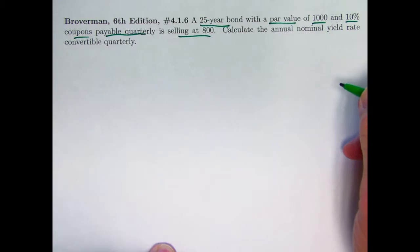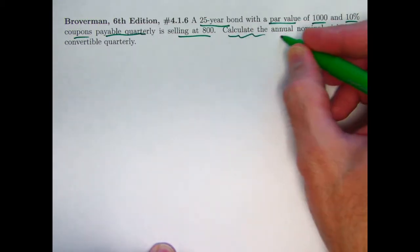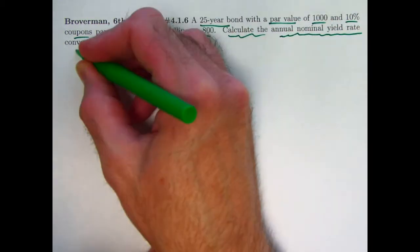and is selling for 800. The goal is to calculate the annual nominal yield rate convertible quarterly.